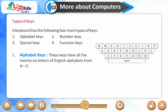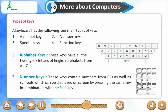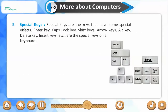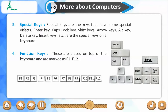Alphabet keys contain all 26 letters of the English alphabet from A to Z. Number keys contain numbers from 0 to 9, as well as symbols which can be displayed by pressing the key in combination with the shift key. Special keys such as Enter, Caps Lock, Shift, Arrow keys, Alt, Delete, and Insert have special effects. Function keys are placed on top of the keyboard and are marked F1 to F12.